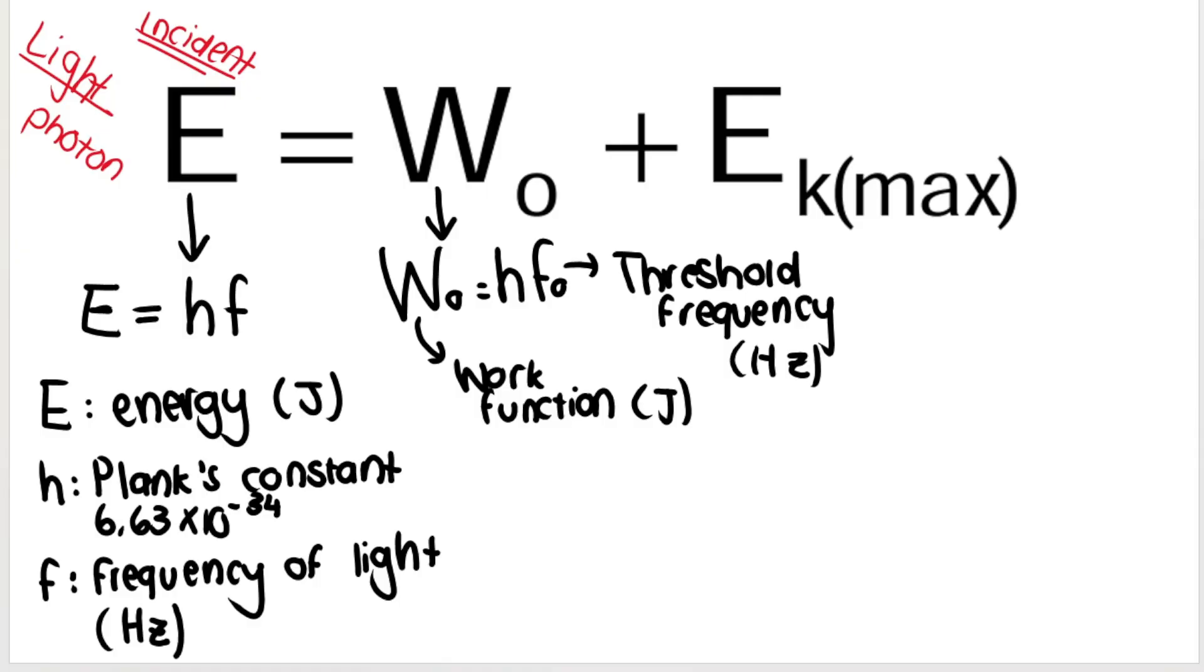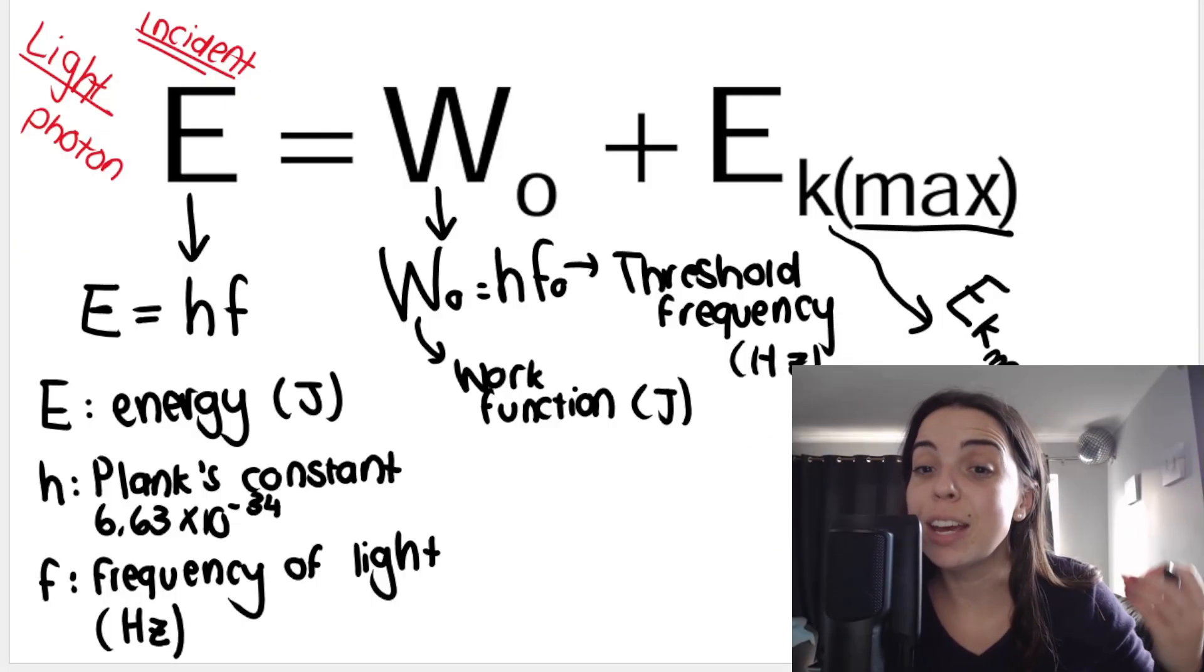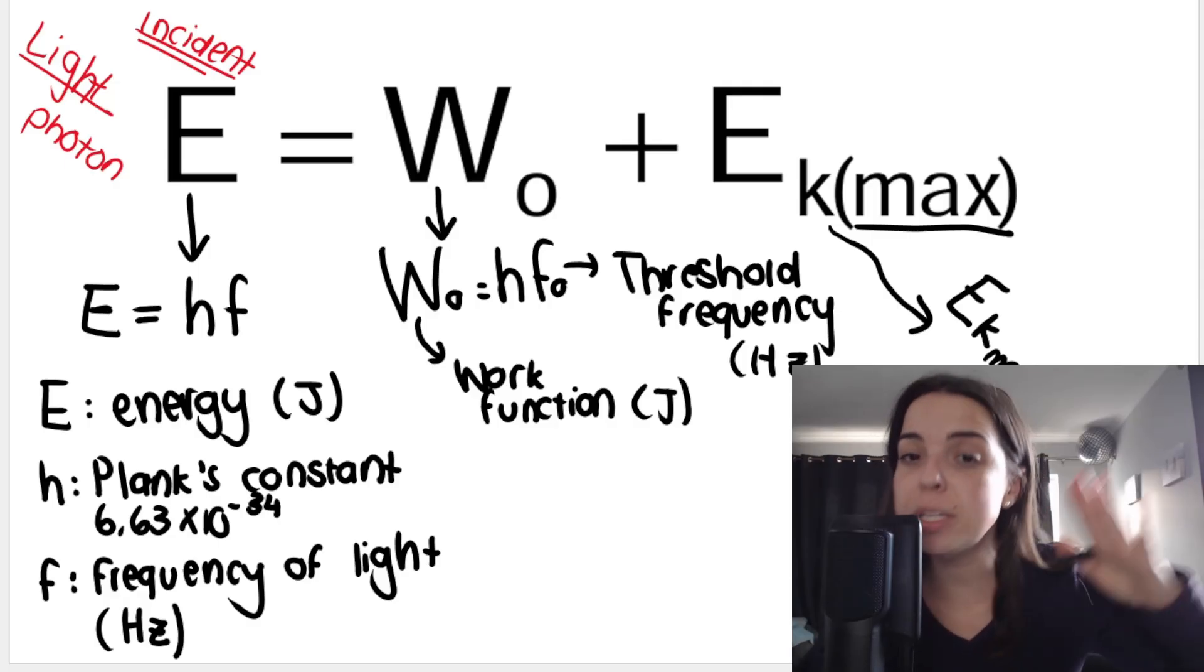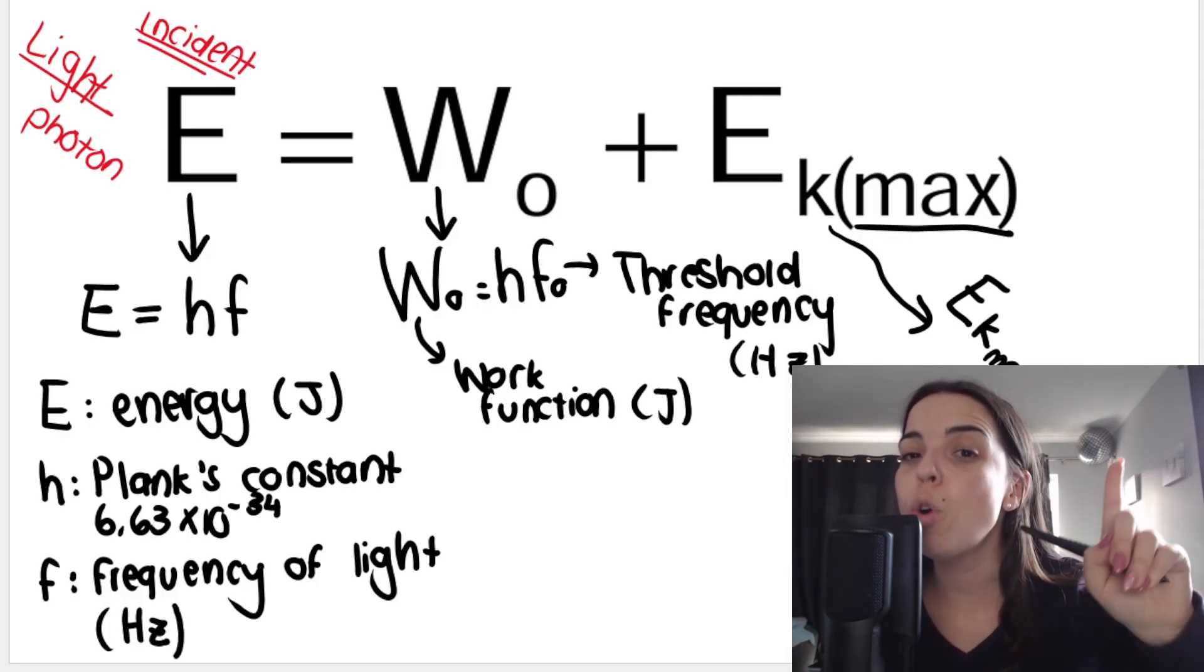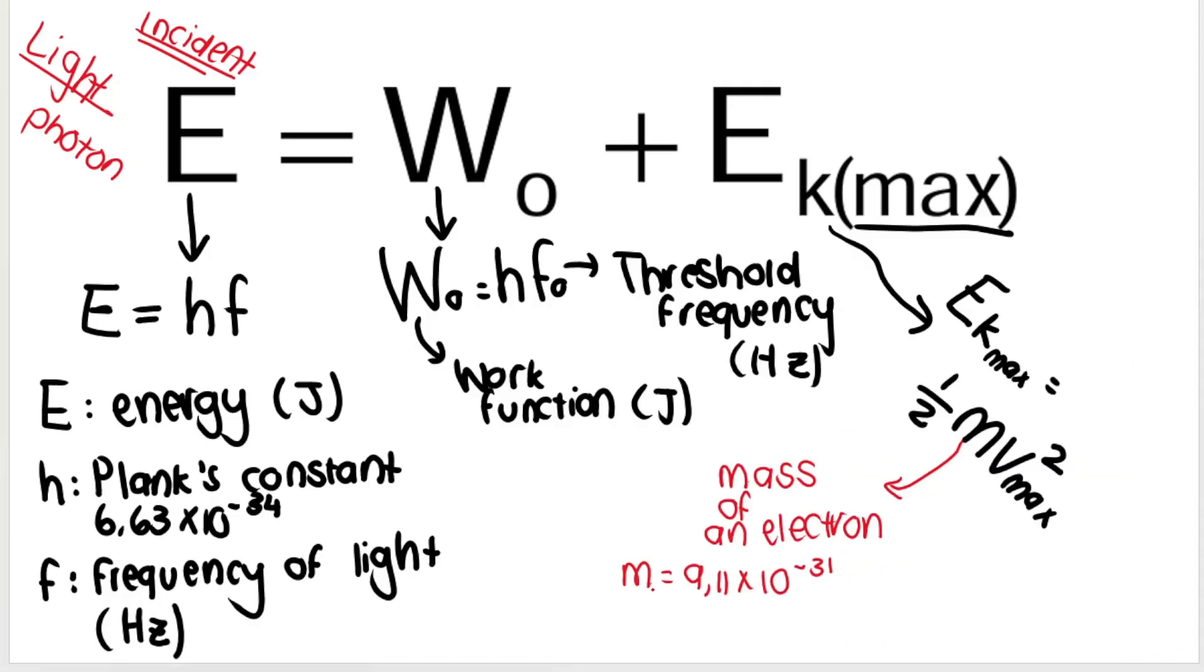And then Eₖ max, maximum kinetic energy. You do have to say max when you write out your formula. Eₖ max is equal to half m v max squared. Mass is the mass of an electron, 9.11 times 10 to the negative 31 kilograms. V max squared is maximum velocity, measured in meters per second.